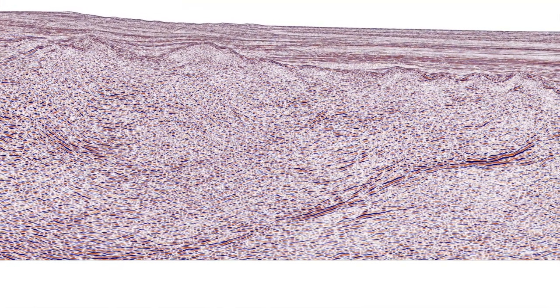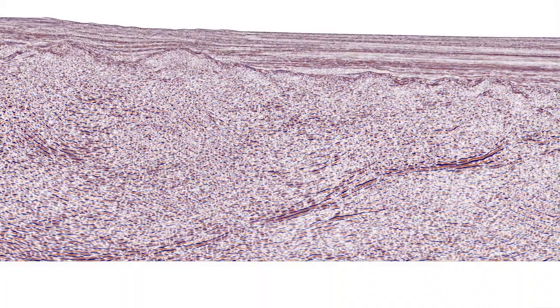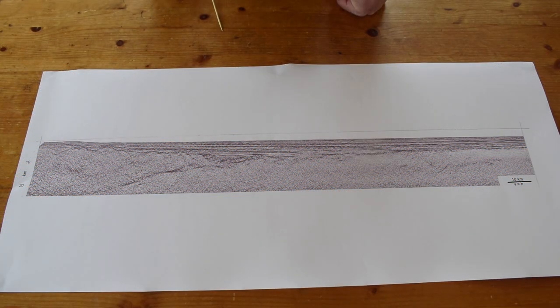Well, this seismic profile is depth converted, so the vertical scale is in kilometers and the representation here is vertical and horizontal scales are equal. For me, I think this is fundamentally important when building structural interpretations of sedimentary basins. Vertical exaggeration can really get in the way and we don't have to worry about it here because our vertical and horizontal scales are equal.